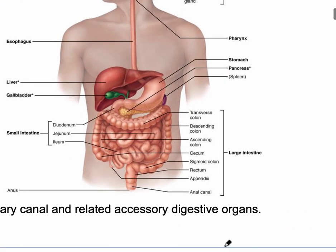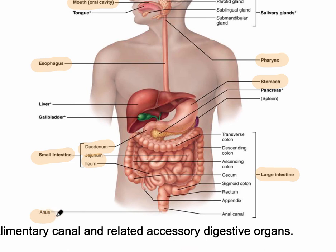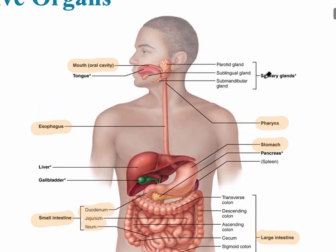Looking at a diagram, we can see that the tube begins at the mouth, then continues into the pharynx — commonly referred to as the throat region — then the esophagus, stomach, small intestine (which has three different regions), large intestine, and finally the anus. The accessory structures include the salivary glands (named based on the region of the oral cavity), the tongue, pancreas, liver, and gallbladder.